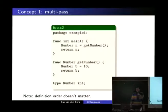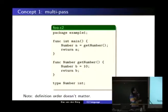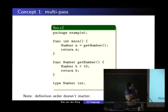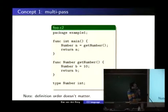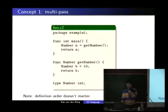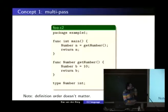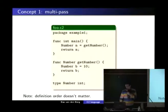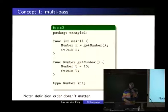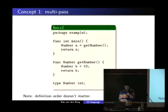The first concept is the multipass. There are three things here: a function main, a function get_number, and a type — this is the typedef. The order of these three doesn't matter; you can do them in any order and the compiler will just figure it out. So the type is used here and defined here, this function is defined here and used here — that doesn't matter. You don't need forward declarations, and they're even forbidden — they'll just give compile errors.